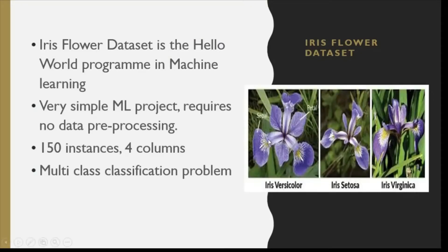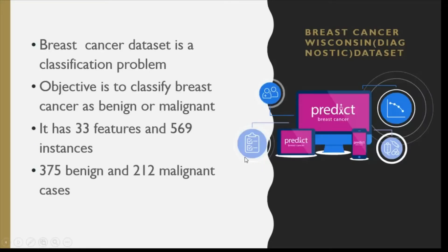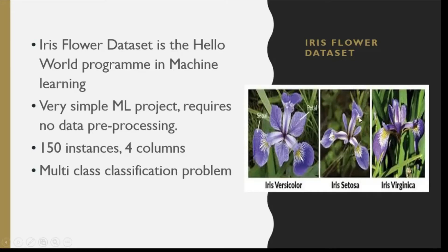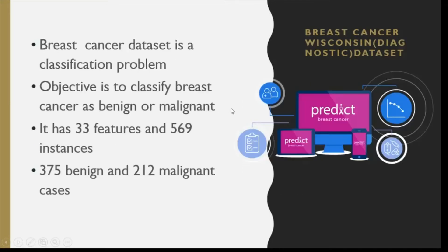The Iris Flower dataset is called the 'Hello World' program in machine learning, as it is the very basic ML project which requires no data pre-processing — no data cleaning and no missing values. Here we have to classify the iris flower into three classes: Versicolor, Setosa, and Virginica, given four features. This is a multi-class classification problem with 150 instances, 50 in each class. I have done it in a further video, so please find the link in the description box.